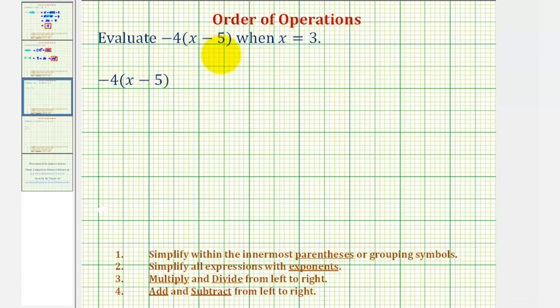We want to evaluate the given variable expression, negative four times the quantity x minus five, when x equals three.